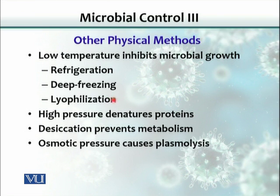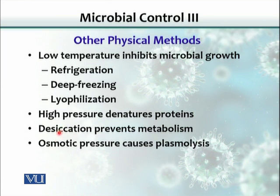High pressure can also be used — it denatures proteins and can be applied for pasteurization or reducing bacterial load. Desiccation prevents metabolism by removing water, which can be achieved by vacuum or low heating so water evaporates. For example, dry meat has a longer shelf life because bacteria and other organisms need water to grow; without water, they cannot grow.